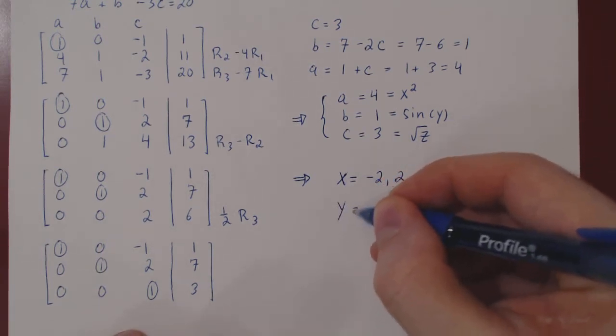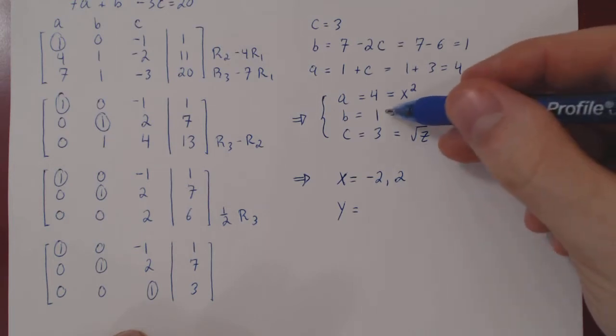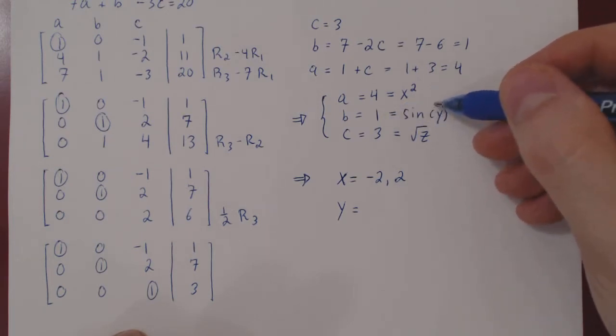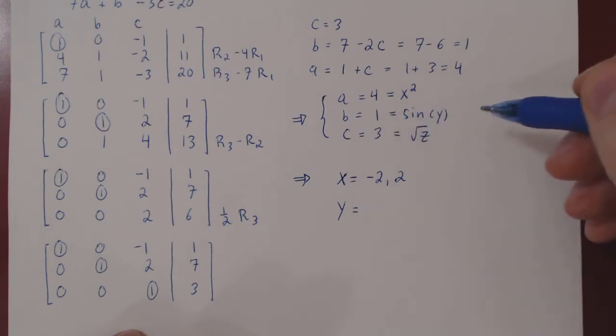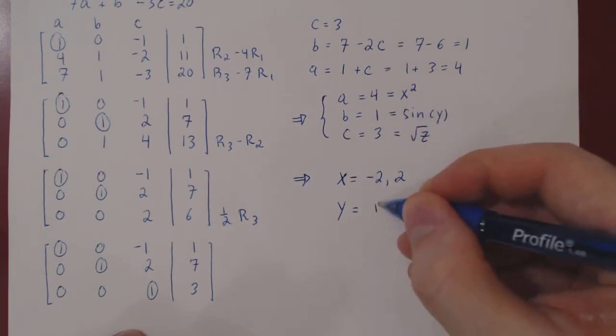y is a bit more interesting, as sine of y equals 1. So we're looking for angles where the sine is equal to 1. Well, if you think of it, a natural choice is pi over 2.